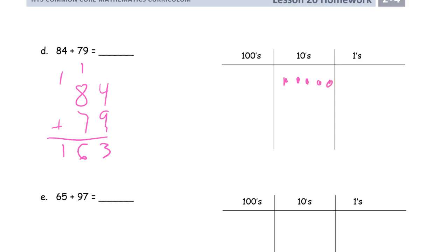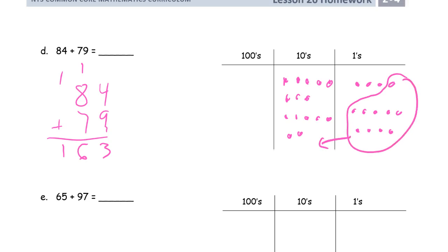Drawing the chips for eighty-four plus seventy-nine: eighty-four has eight tens and four ones; seventy-nine has seven tens and nine ones. I need one of these ones to make a ten, and I need two more of these to make a ten here with the eight that's up there — looping in carefully to make a ten. That makes a hundred. Now I can see I have three ones, six tens, and one hundred — one hundred sixty-three both times. That's what I should have.